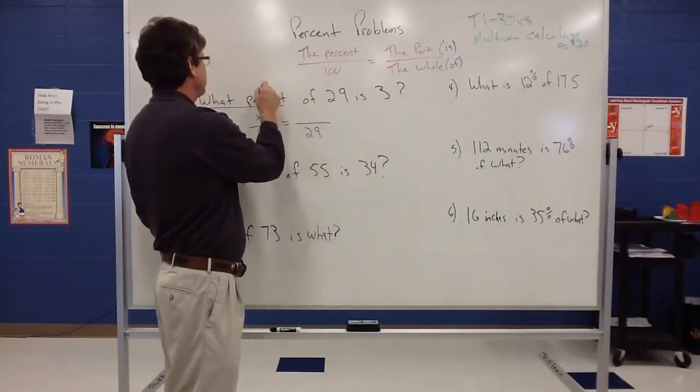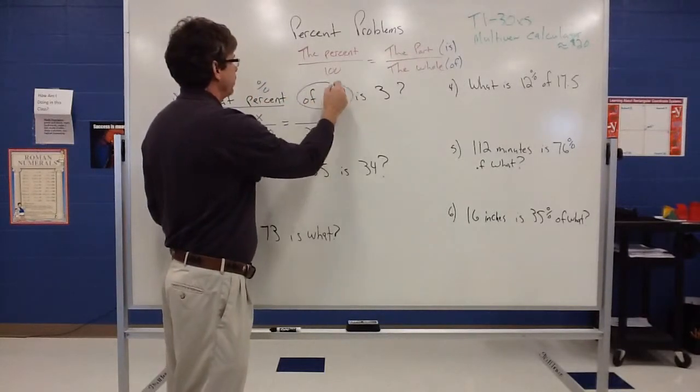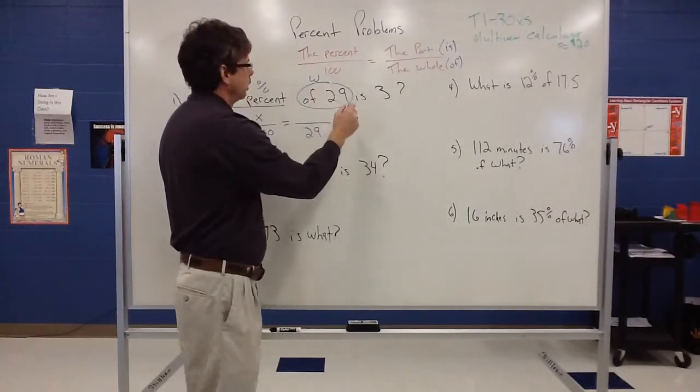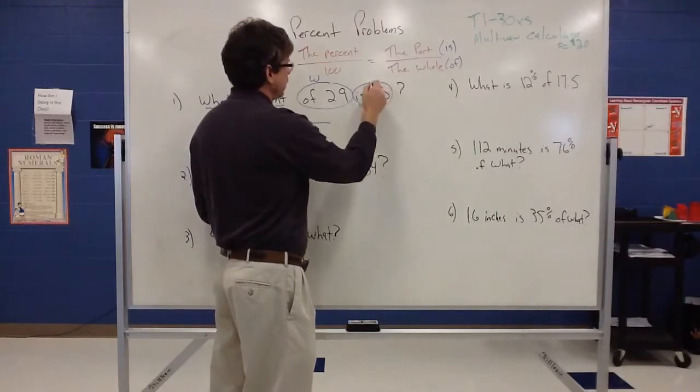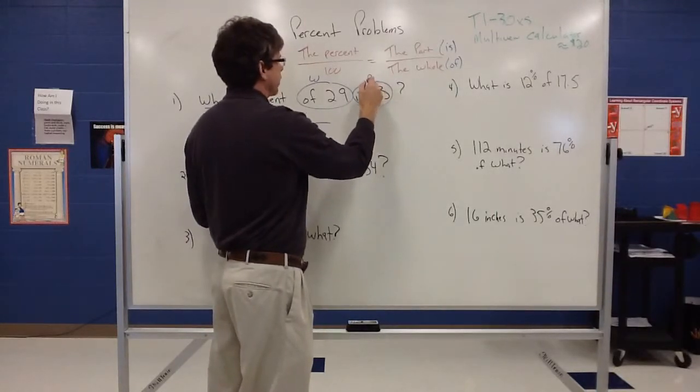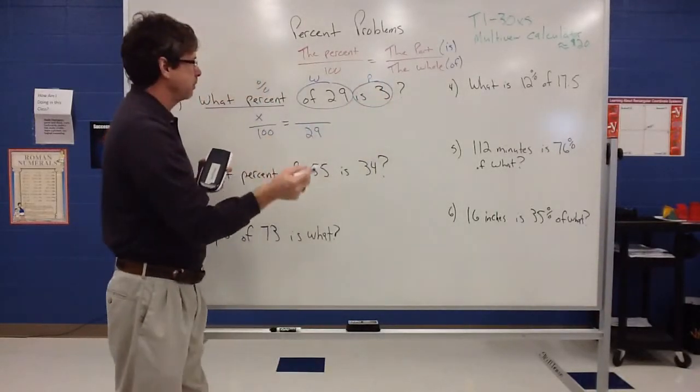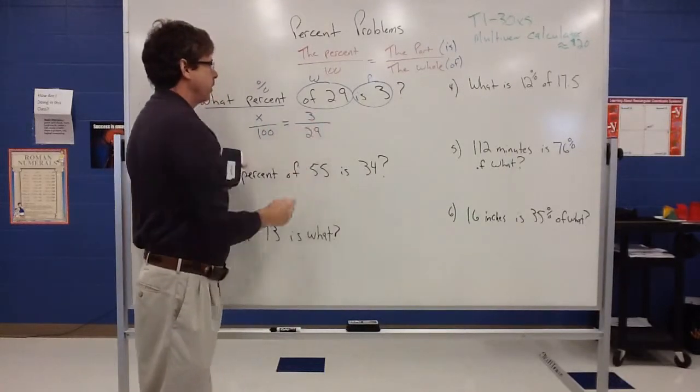So this becomes my percent, this actually becomes my whole. If it is 3, that's the part that I get. So when I take the percent of 29, I get my part. So that 3 would become the part.